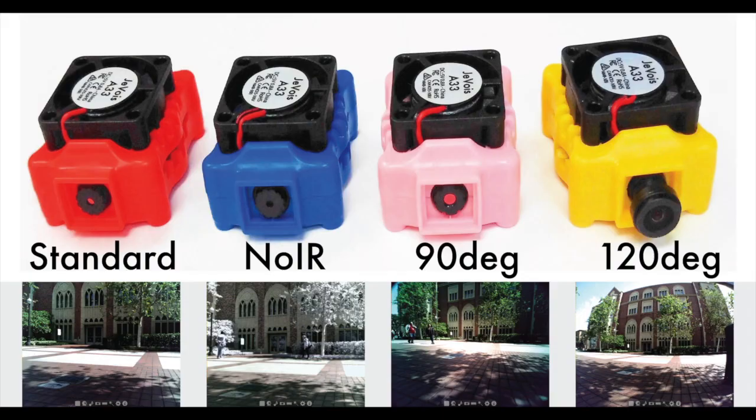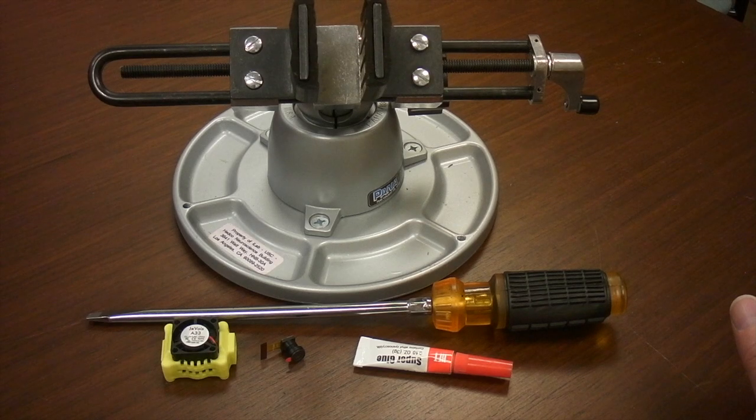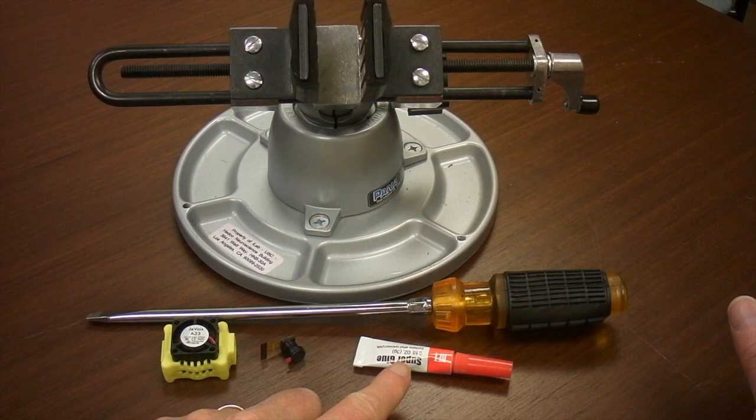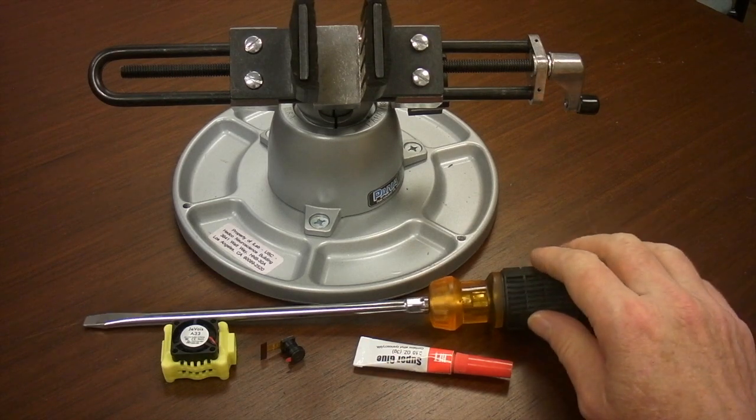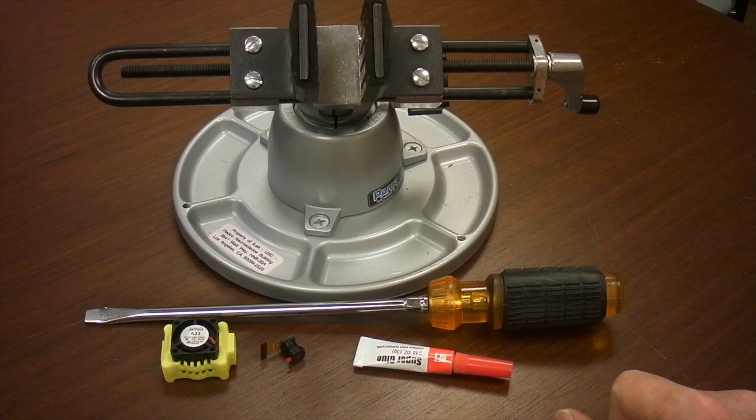Here are instructions for how to install a new camera sensor and lens on your Jevois smart camera. You will need a Jevois camera, a new sensor, some super glue, and the largest flat screwdriver you can find, and possibly a vice to put the camera back together.